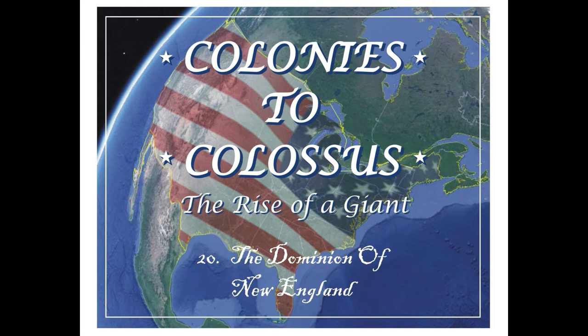One of the reasons that James set up this super colony of the Dominion of New England was so that he could consolidate colonial resources and use them against the French in Canada. I also think that vengeance played a certain role in the reason James decided to restructure the New England colonies in this way. To govern this new large colony, King James selected Sir Edmund Andros, a loyal follower who had been previously governor of New York and New Jersey. No doubt the new governor was certainly flattered by the commission, as well as the trust given to him, but really he had an impossible task.